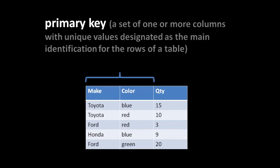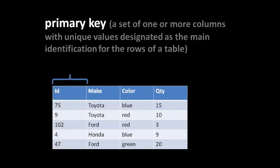In our database schemas, when we sort out what tables we need and what columns they should have, we generally designate for each table a primary key. The primary key is the column or set of columns whose values are used to uniquely identify each row. In practice, it's by far most common to give each table its own ID column with a unique arbitrary integer, and these ID columns are most commonly used as primary keys.